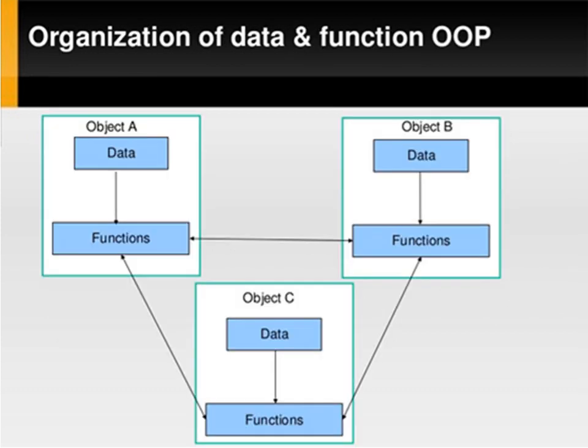By seeing this diagram we will be very clear about the definition and features of OOPs. In OOPs all things are represented as objects. Here there are three objects named object A, object B and object C. Each object contains data and function. Objects share the partition memory area for both data and functions, and the object ties the data and function together. This method is called information hiding or data hiding. One object will communicate with another object through functions, which is called message passing or message communication.